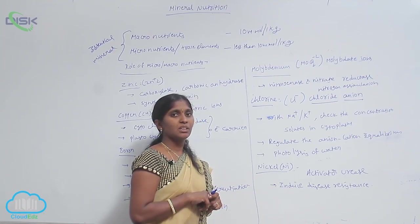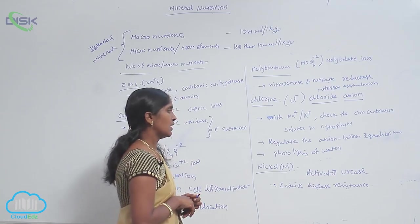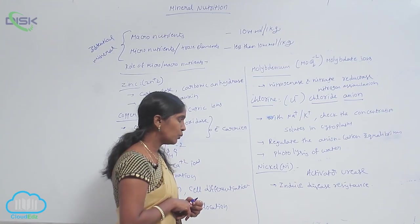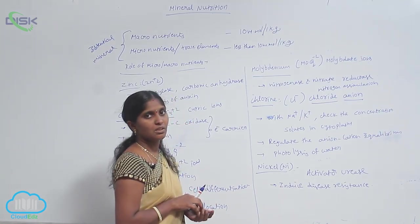It also induces disease resistance in some plants. This means nickel is also important. It is the 17th essential element and is the activator for urease enzyme. In a few plants, it has been found to induce disease resistance.